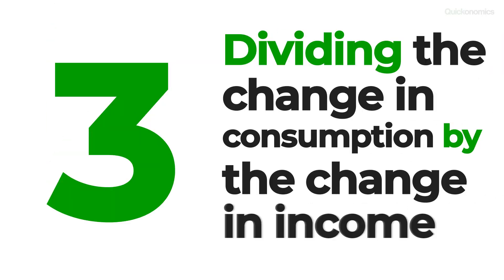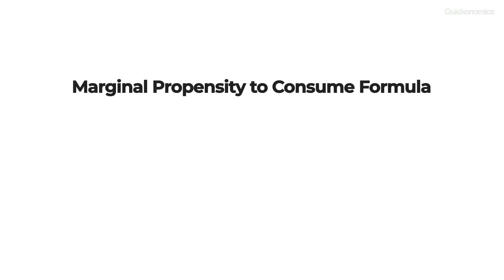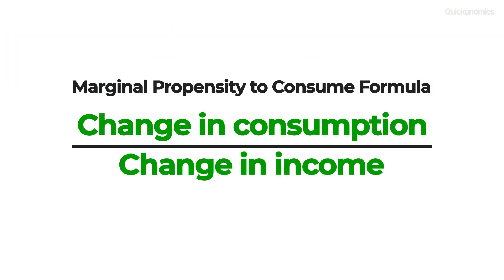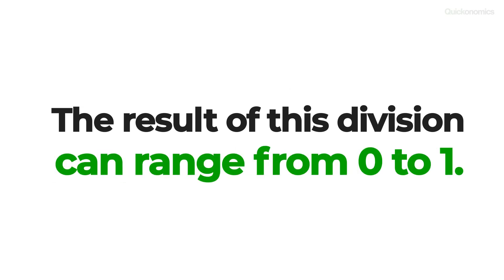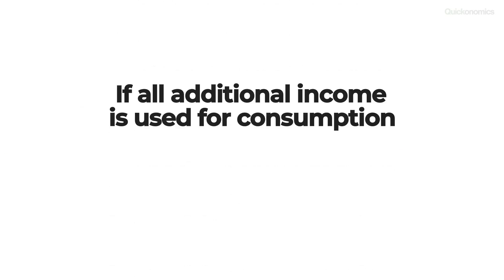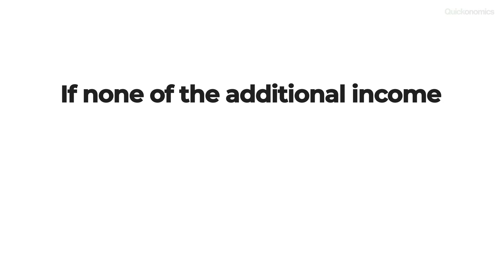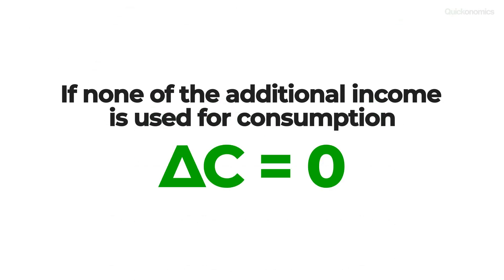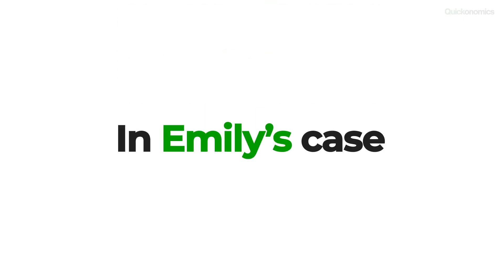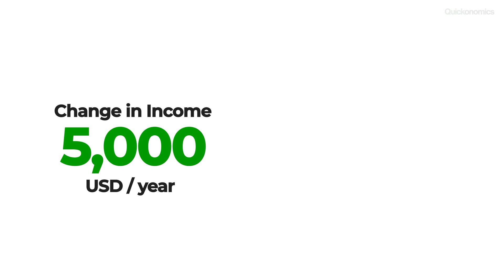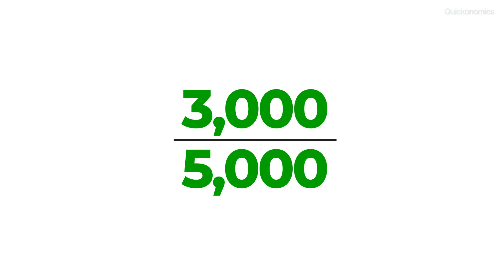Now on to the third and final step: dividing the change in consumption by the change in income. We can calculate the marginal propensity to consume by dividing delta C by delta Y. The result of this division can range from 0 to 1. In the case of Emily, the change in income is $5,000 and the resulting change in consumption is $3,000. If we divide the $3,000 by the $5,000, we can see that her marginal propensity to consume is 0.6.